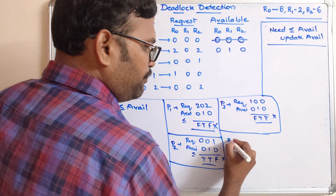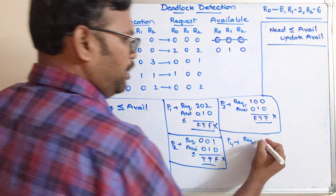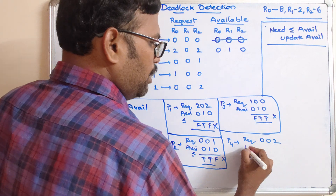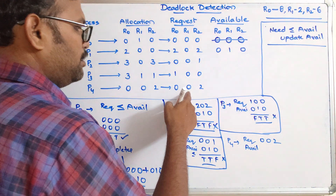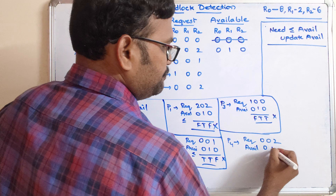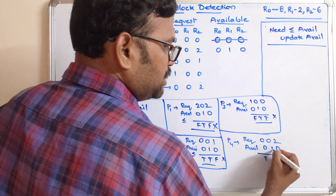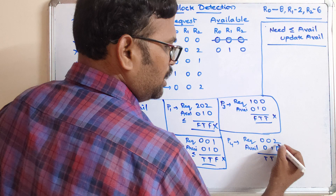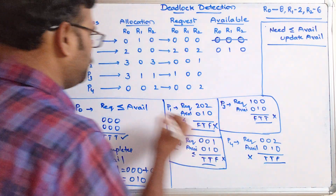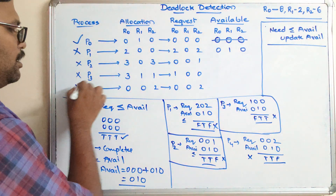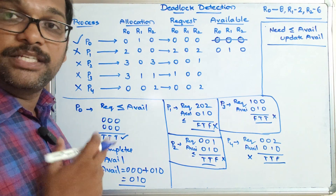Now P4. P4 requires 0,0,2 and available is 0,1,0. Checking: 0 ≤ 0 is true, 0 ≤ 1 is true, but 2 ≤ 0 is false. Since there is one false, P4 also cannot complete its execution.